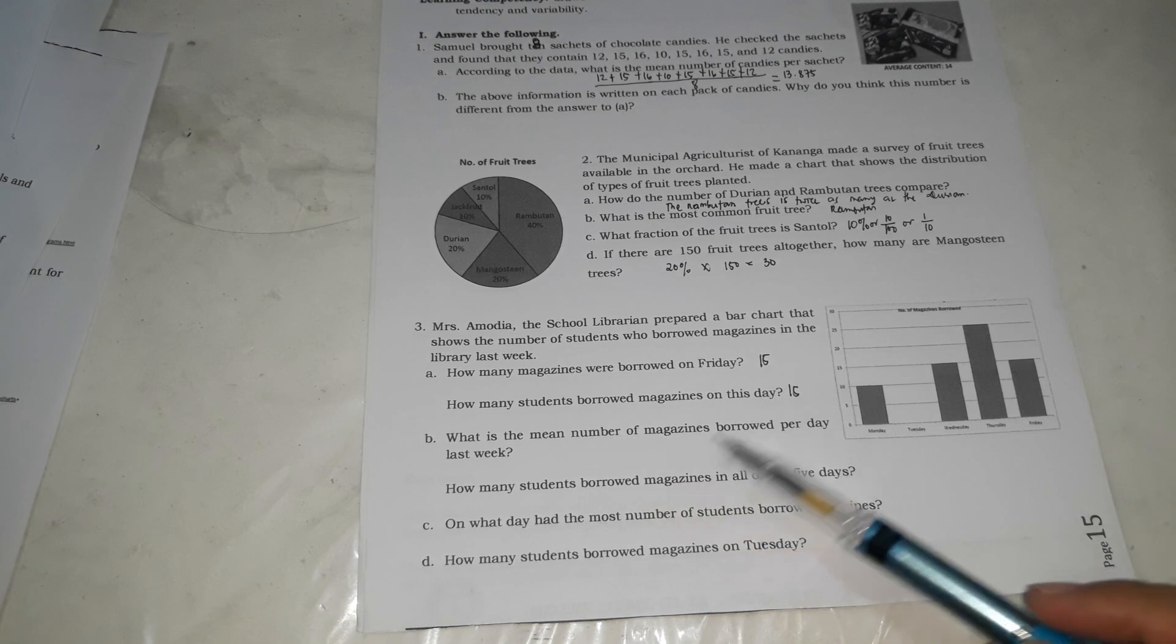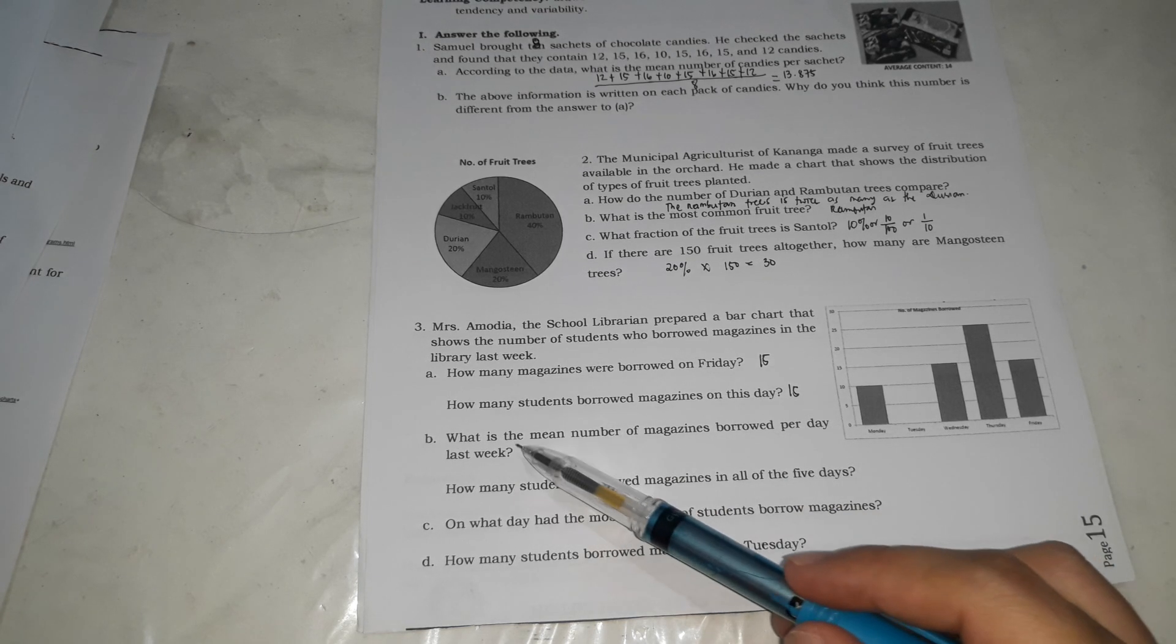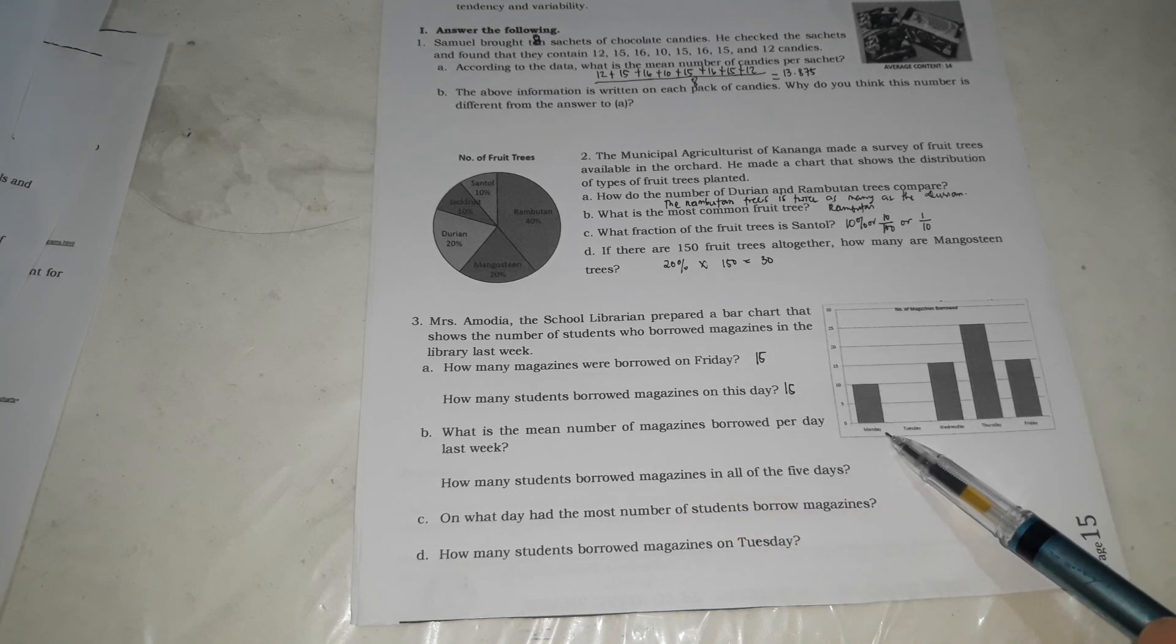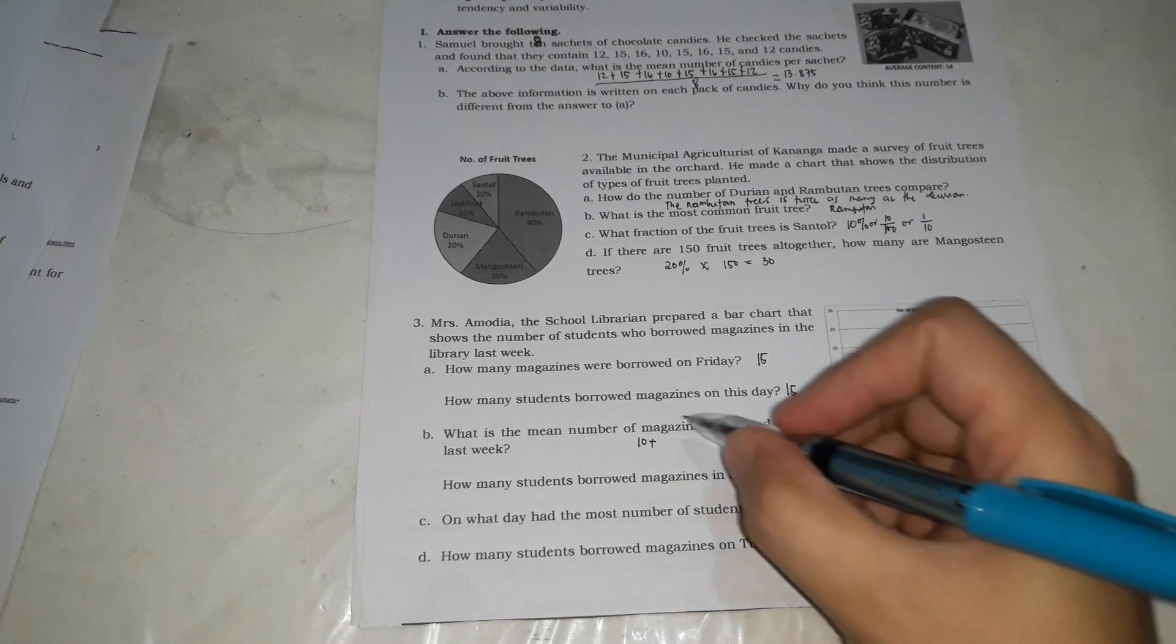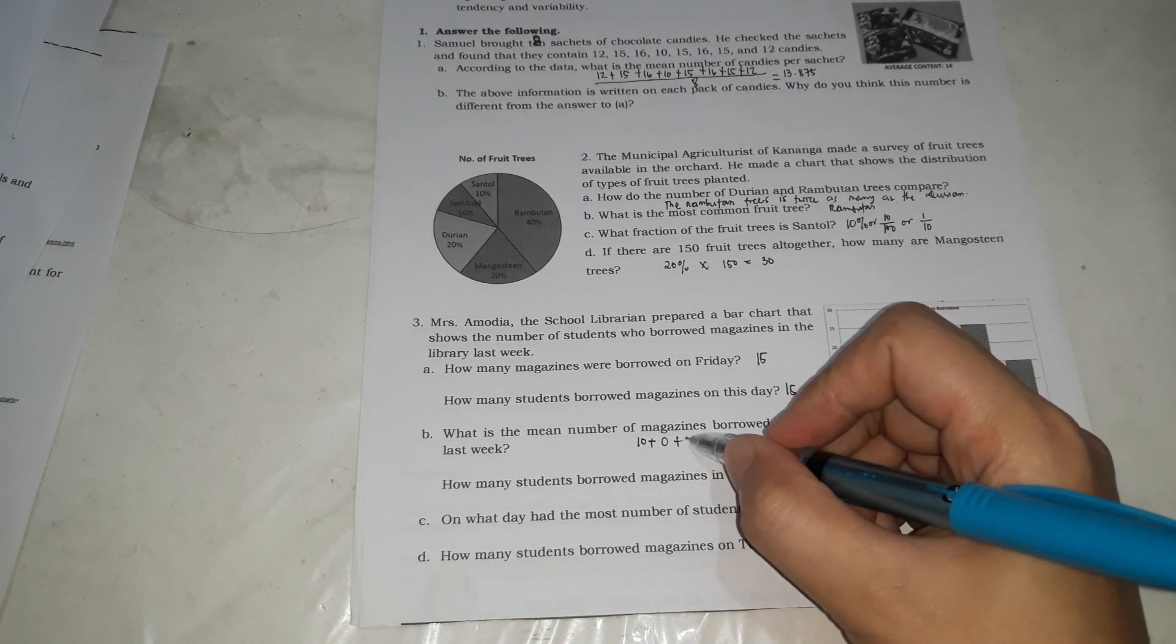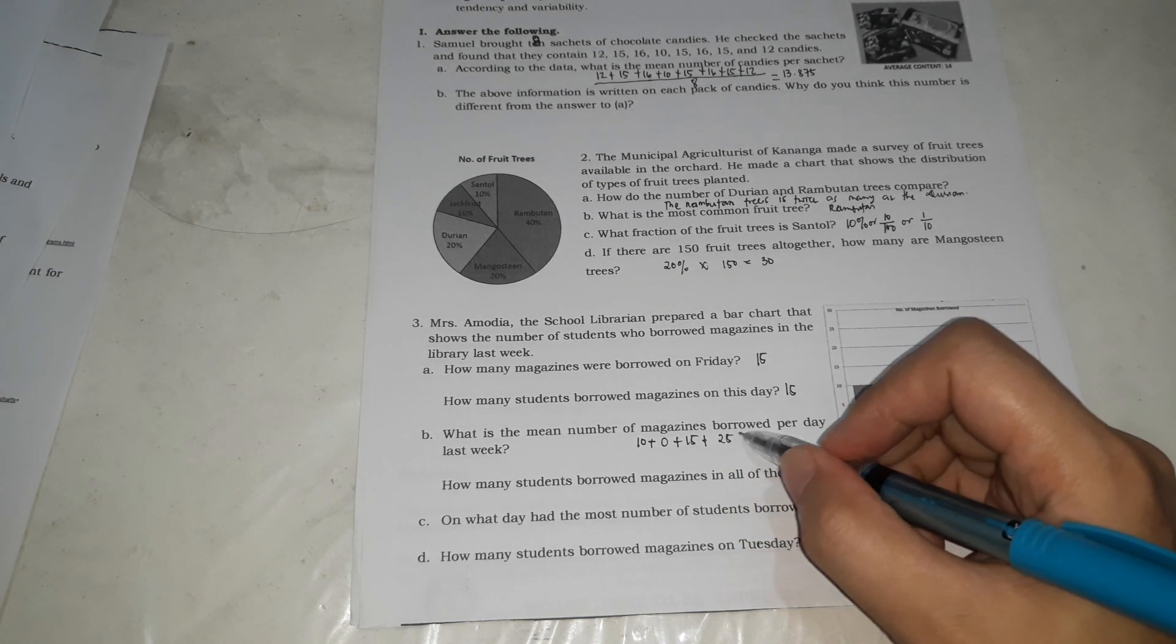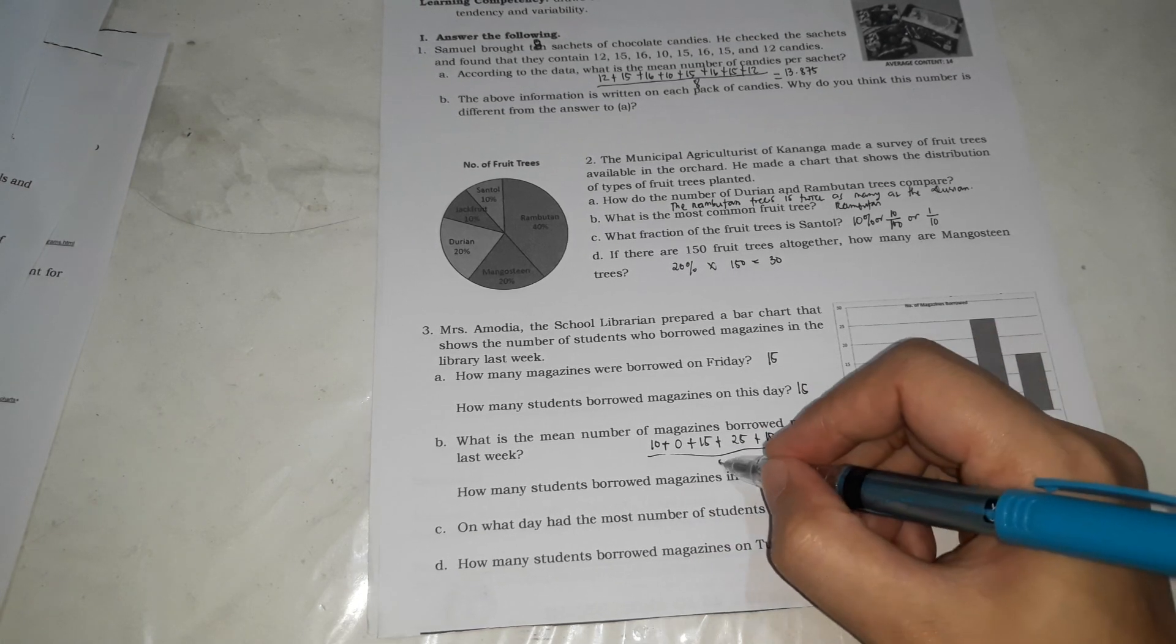What is the mean number of magazines borrowed per day last week? What is the mean number? Kailangan natin yung mean number, ibig sabihin kailangan natin kunin yung average. Monday, it's 10. For Tuesday, 0. For Wednesday, it's 15. Mean ang hinahanap kasi... So, yung mean, i-plus natin. At saka i-divide natin by the number of days. The number of days is 5. Plus natin yung 10 plus 15 plus 25 plus 15 divided by 5. So, the mean is 13.